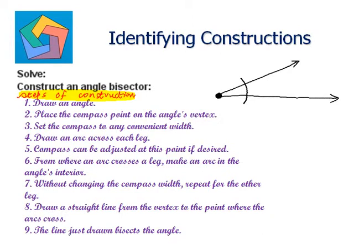The compass can be adjusted at this point if desired; otherwise this width is also okay. From where the arc crosses each leg, make an arc in the angle's interior. From one point draw an arc, and without changing the compass width, repeat for the other leg and draw another arc. Draw a straight line from the vertex to the point where these arcs cross. The line just drawn bisects the angle. This is how we construct an angle bisector.